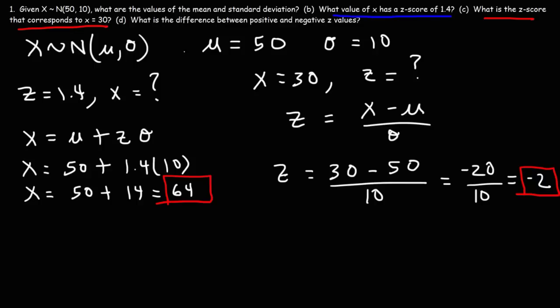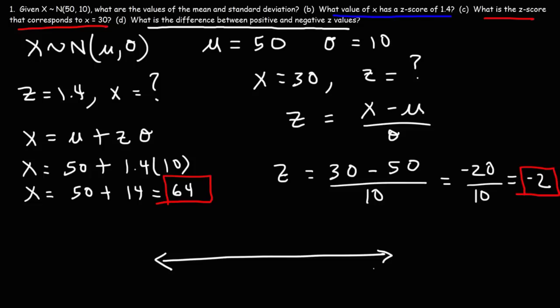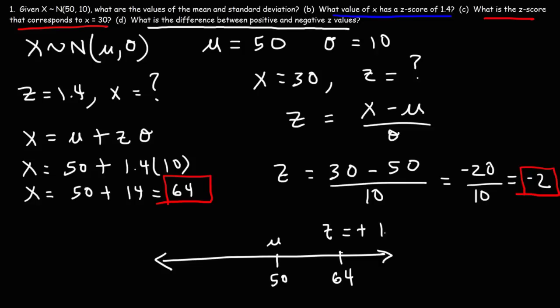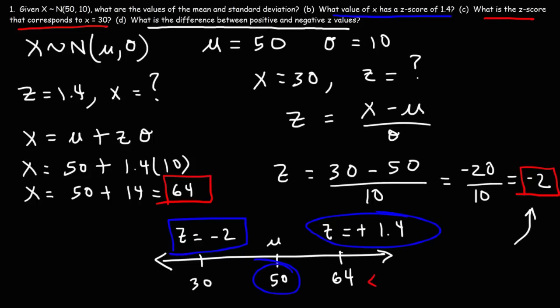Part D: the difference between positive and negative z values. When x was 64, the z-value was positive 1.4 — above the mean. When x was 30, the z-value was negative 2 — below the mean. Negative z values correspond to x values below the mean, and positive z values correspond to x values above the mean.